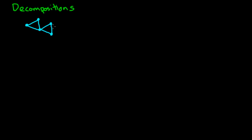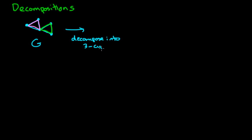This is a very simple graph right here — I've basically constructed it so that the example is very easy. What I can do is take a look at this graph G and I can certainly find a three-cycle in this graph. Here's one highlighted in pink, and I can find another three-cycle in this graph over here highlighted in green. So I can think of taking this graph G and decomposing it into three-cycles: this three-cycle as well as this three-cycle.